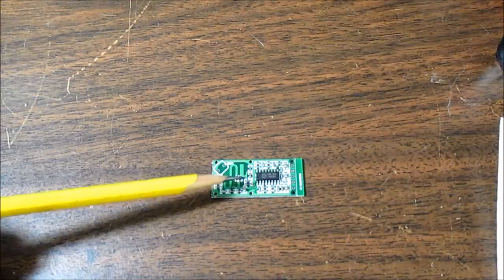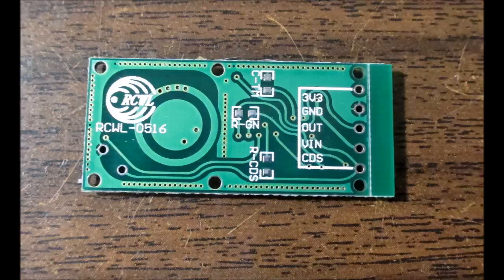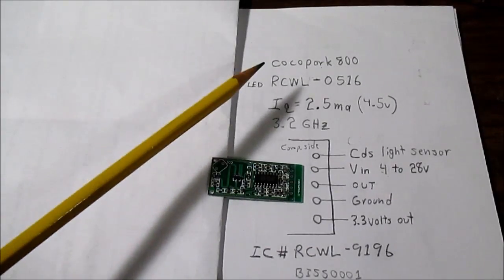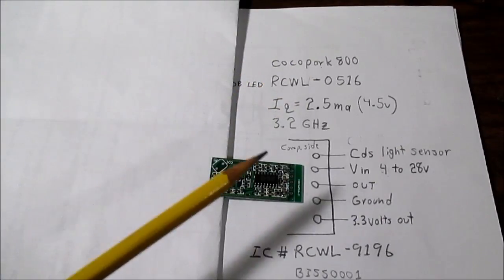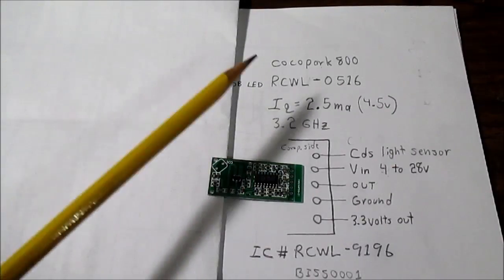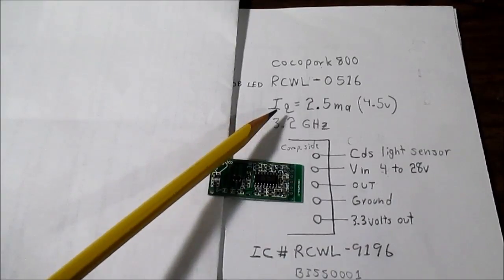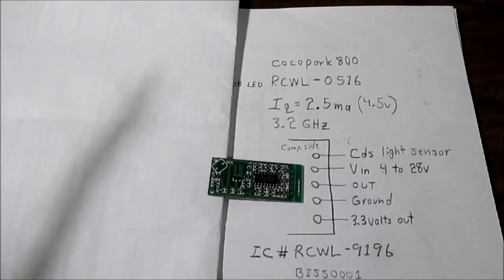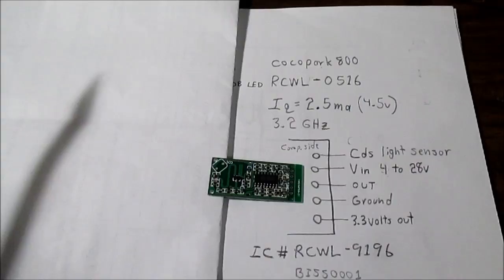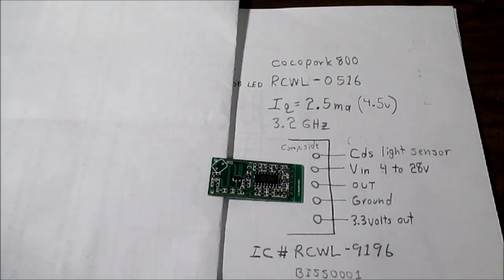I'll put in some close-up shots of this board as well. I bought these off of eBay from seller Cocoa Park 800. They're only 99 cents a piece, free shipping. So I bought a couple of them. Amazing price for what it is. It does take about a month coming from China. And I measured the quiescent current or the idle current at a supply voltage of four and a half volts was 2.5 milliamps. The infrared type sensors were in the microamp range. So I guess because of the RF circuit this thing has, it requires more current. So it may not be ideal for long-term battery use.